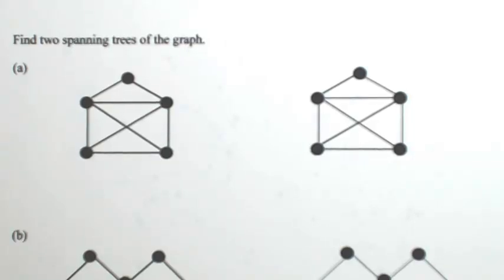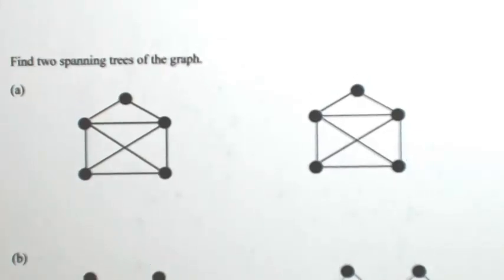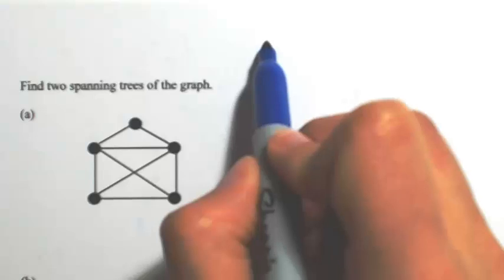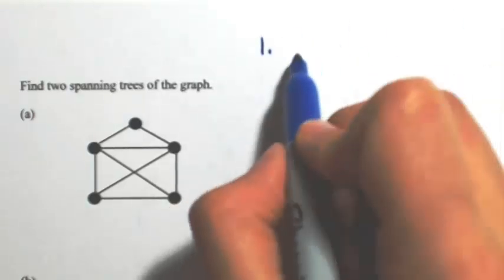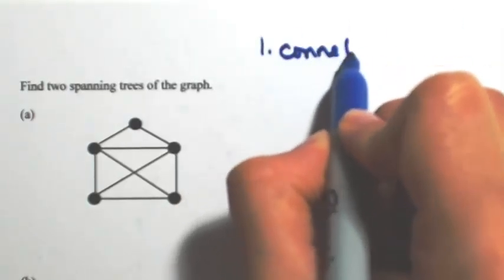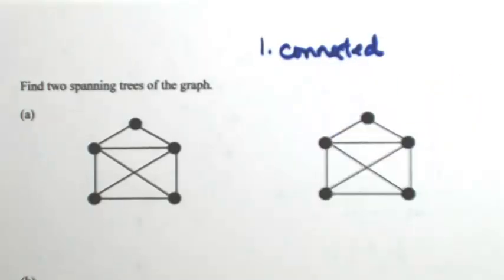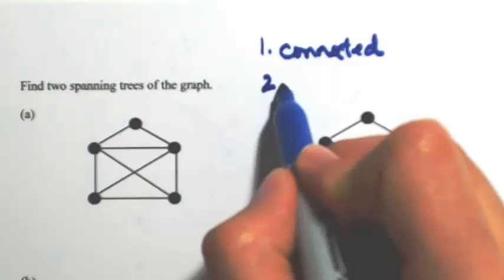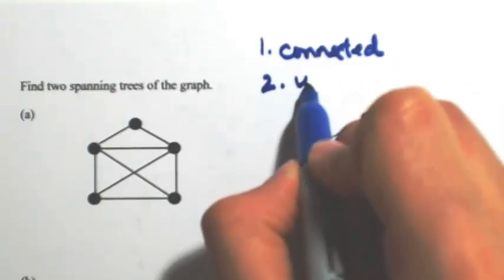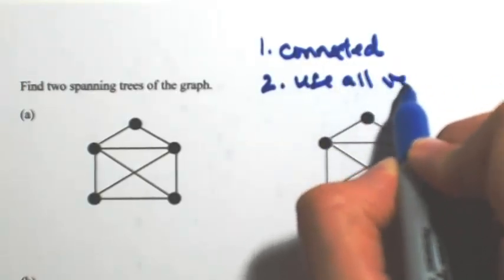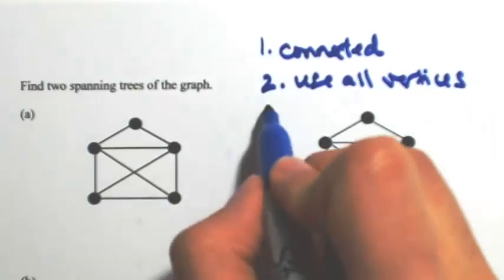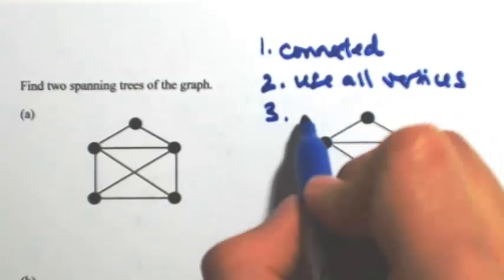Find two spanning trees of the graph. In finding spanning trees, we're basically looking for three things to happen. First, everything needs to be connected, which means you can get from one vertex to the other. Second, it needs to use all of the vertices. And third, there cannot be any circuits.